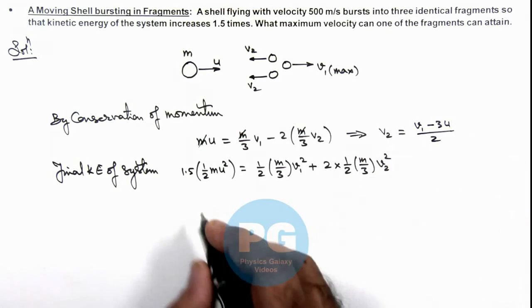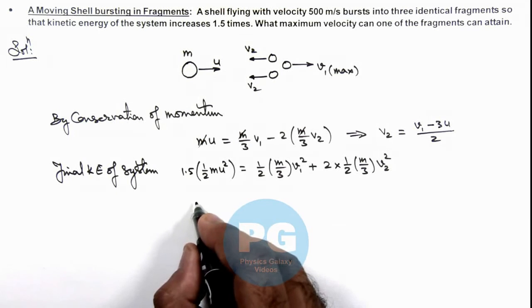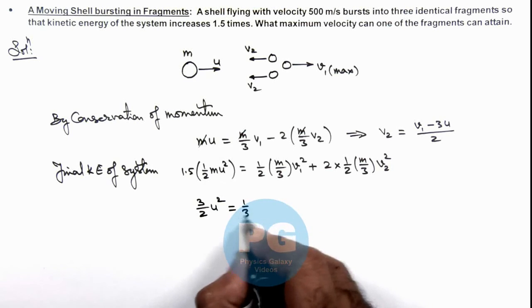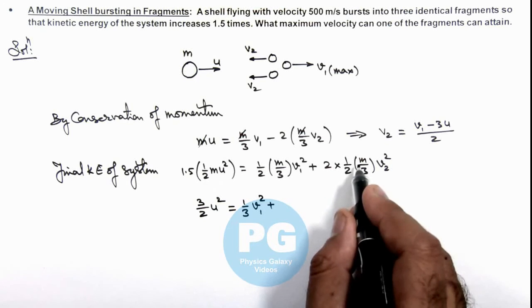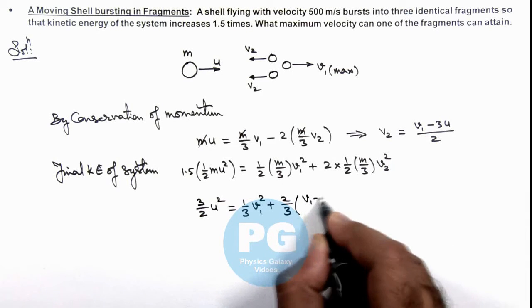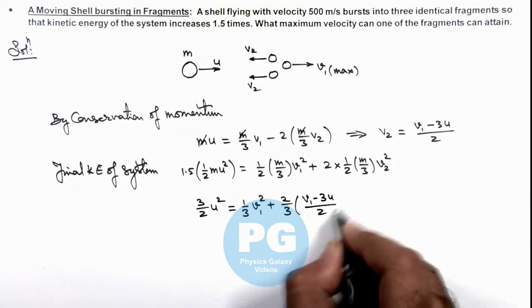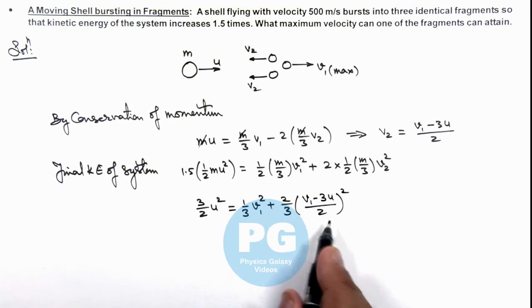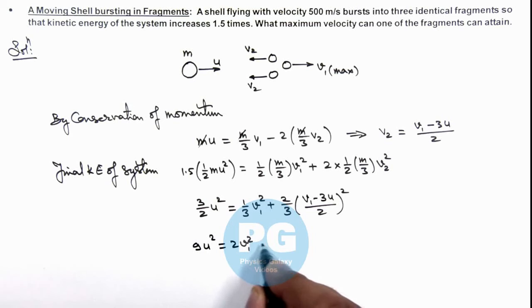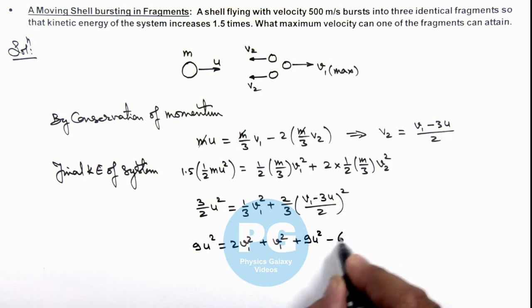If we put it over here you can see the value we are getting is 3/2·u² equal to 1/3·v₁² plus 2/3 times v₂ value, which is (v₁ - 3u)/2 whole square. On further simplifying this expression, we'll be getting 9u² equal to 2v₁² plus v₁² plus 9u² minus 6uv₁.